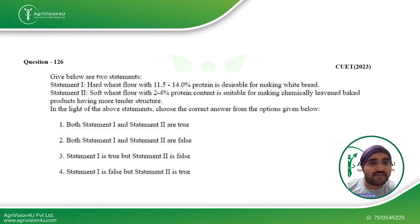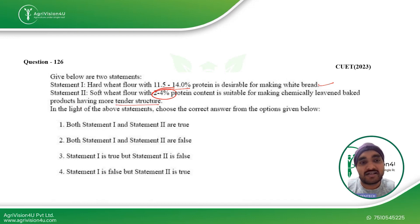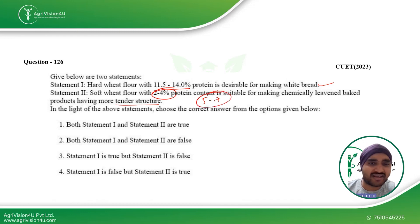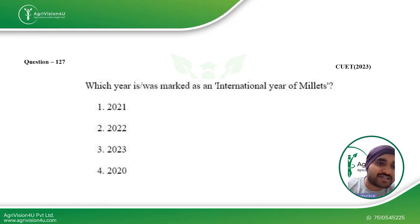Next, a statement-based question on wheat flour. Statement 1: hard wheat flour with 11.5 to 14 percent protein is desirable for making white bread — yes, correct. Statement 2: soft wheat flour with 2 to 4 percent protein is suitable for making chemically leavened baked products with a more tender structure — this is wrong, because soft wheat has an ideal protein content of 5 to 7 percent, so 2 to 4 percent is too low. Statement 1 is right, statement 2 is wrong — the third option is the answer.